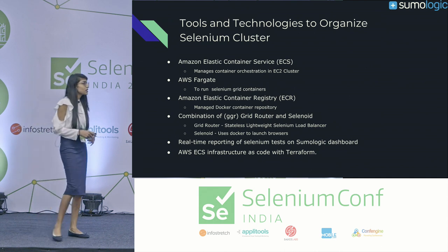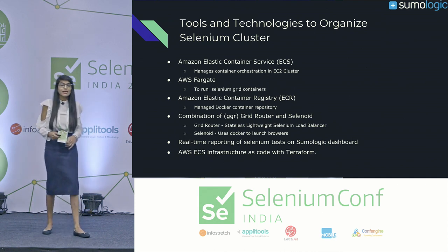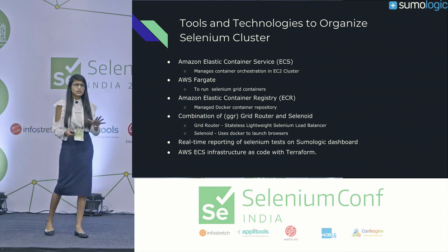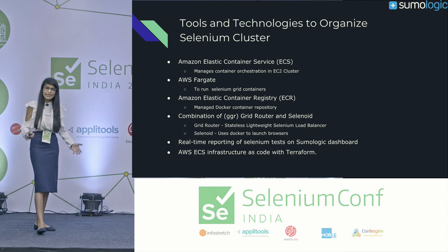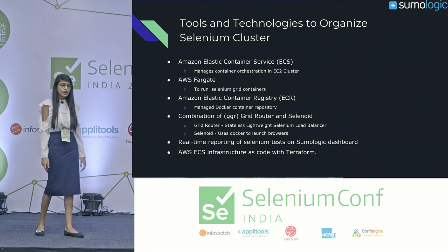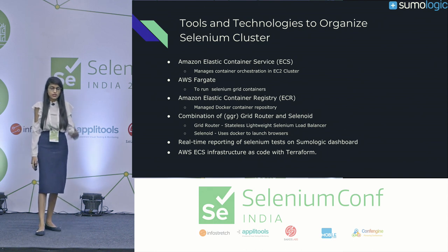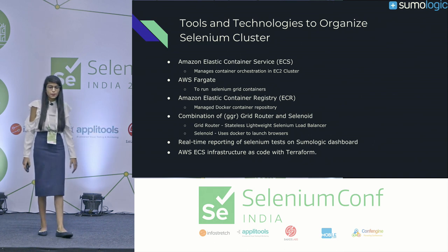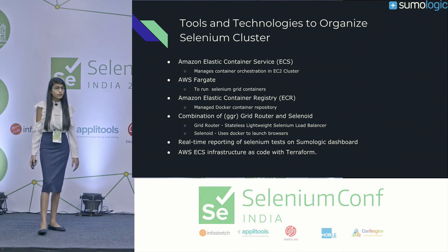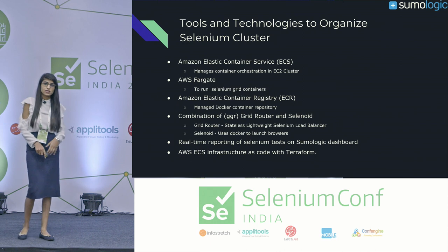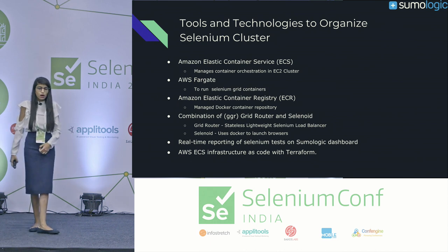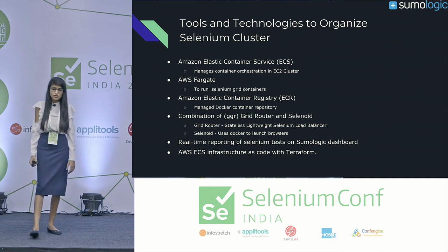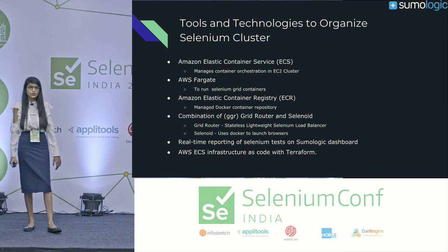Next, we are using a combination of Grid Router and Solenoid. Grid Router is simply a Selenium load balancer — stateless and very lightweight. Solenoid is a powerful Google implementation of the original Selenium hub code that uses Docker to launch browsers. We are using Terraform to have our infrastructure as code, which I'll discuss later. Also, for real-time reporting of our Selenium tests and triaging test failures, we are using our own Sumo dashboards.